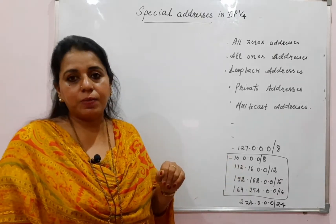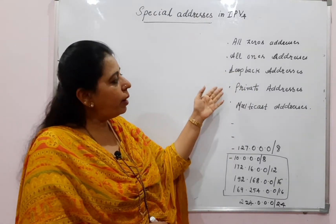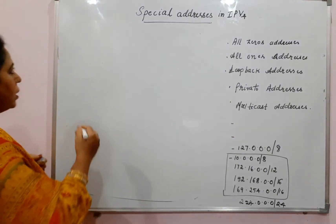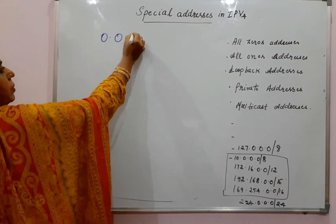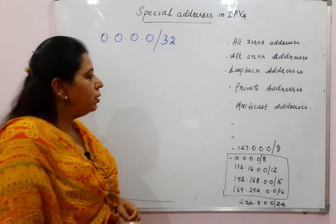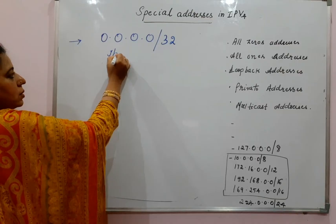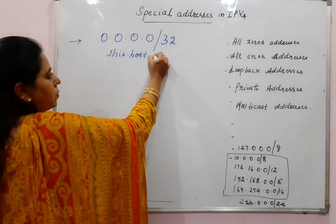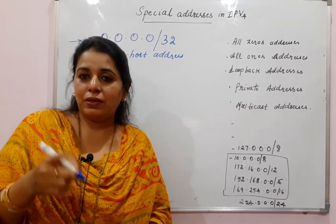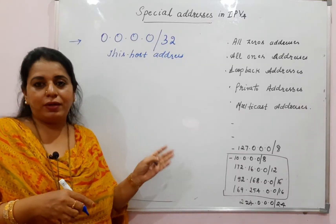The categories of special addresses are: first, all-zeros address; second, all-ones address; third, loopback address; fourth, private addresses; and fifth, multicast address. The all-zeros address in decimal notation is 0.0.0.0/32, using CIDR notation. The prefix value is 32, so 2 to the power of (32 minus 32) equals 2 to the power of 0, which is 1 — meaning this is one single address in the entire IPv4 address space, called the 'this host' address.